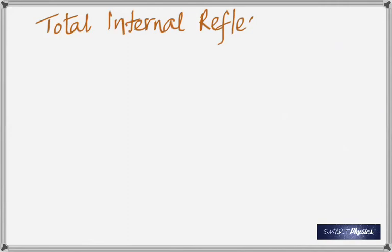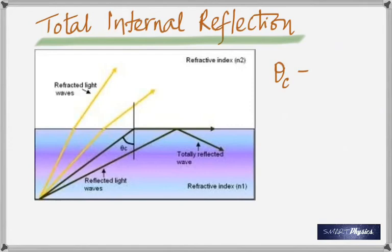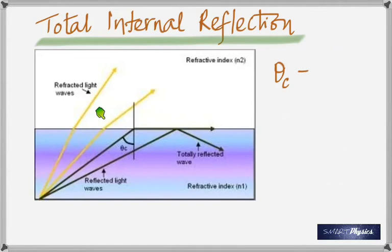Now let's find out why diamonds are precious — it's because of a phenomenon called total internal reflection. Watch this diagram, which appears to show light going from water into air. The angle of incidence is small at first and the light comes out. As you keep increasing the angle of incidence, the refracted ray bends further and further away from the perpendicular, going more and more away from the perpendicular.